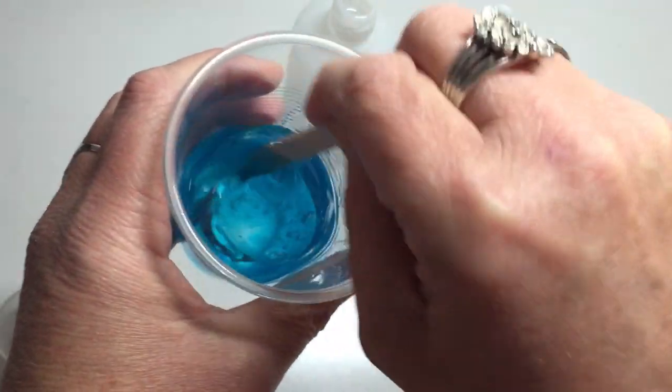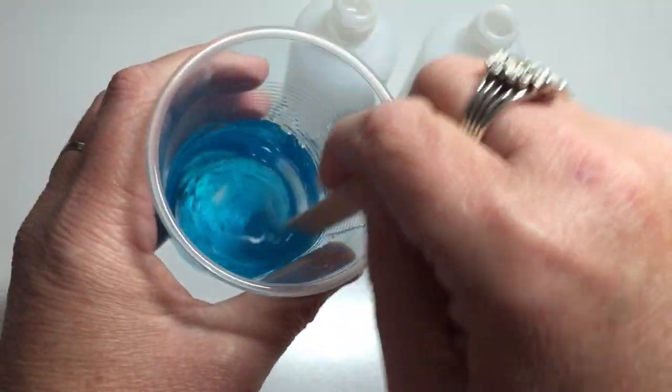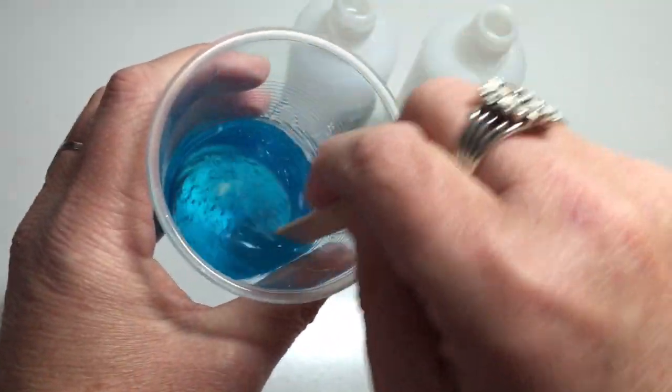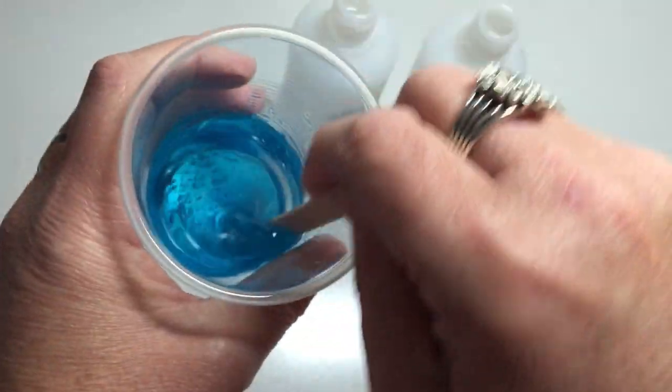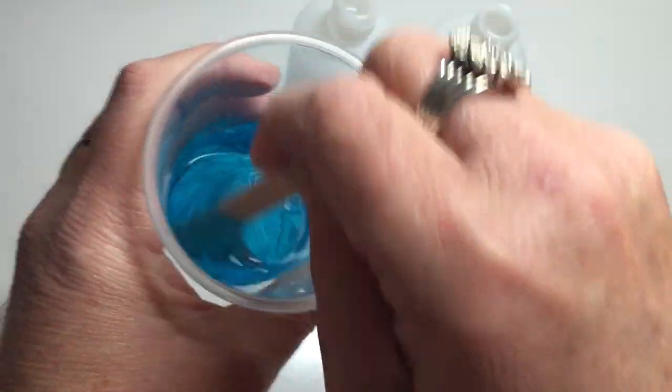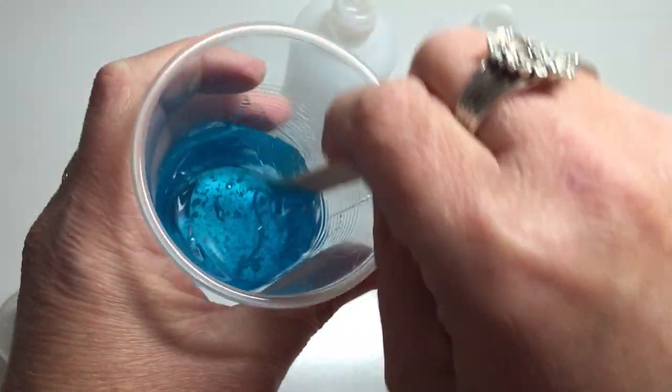The difficult part about coloring the resin and you'll see when I pour it onto my surface is getting, because I'm doing quite a thin layer, the color to look even across the whole surface.